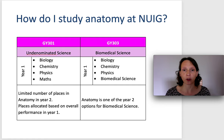Places are allocated based on overall performance in year one. If you're studying biomedical science GY303, then anatomy is one of the subjects which is an option for you in second year.